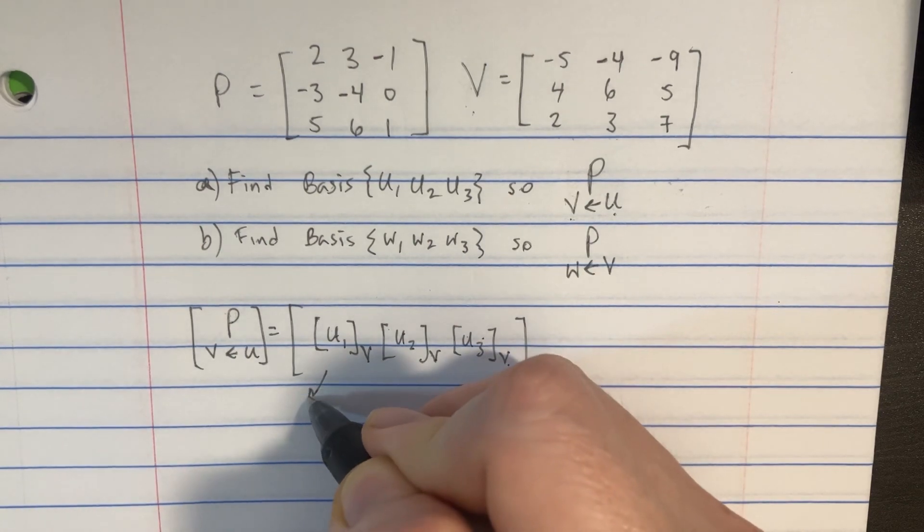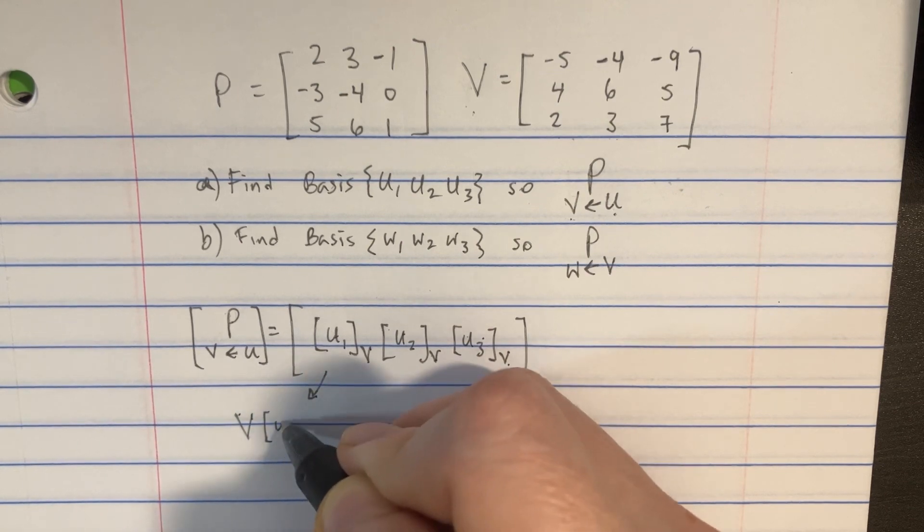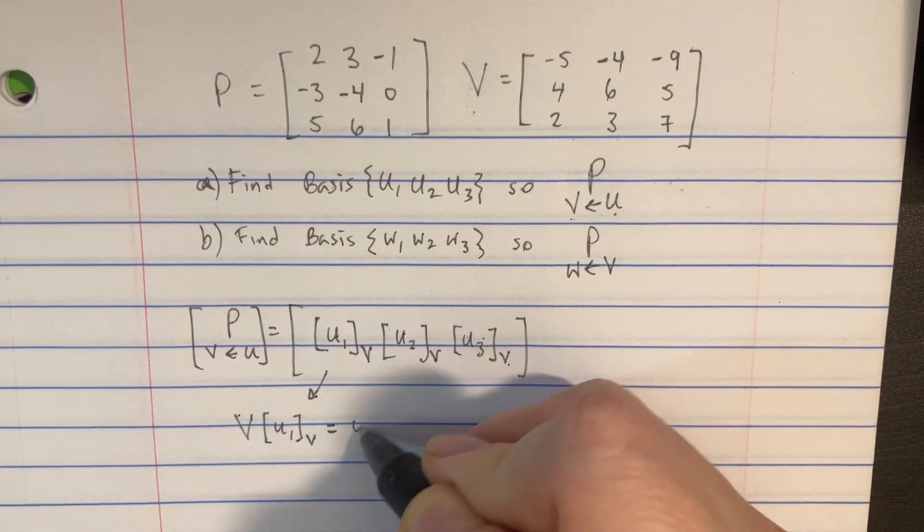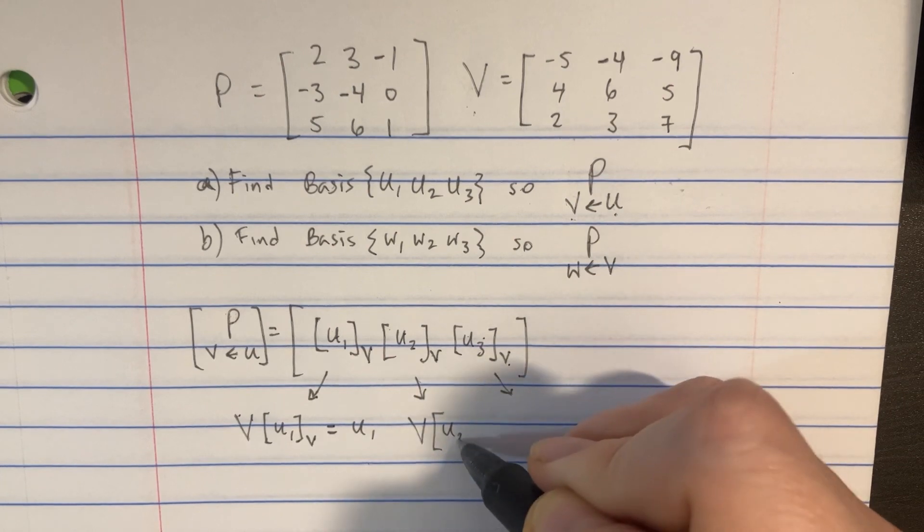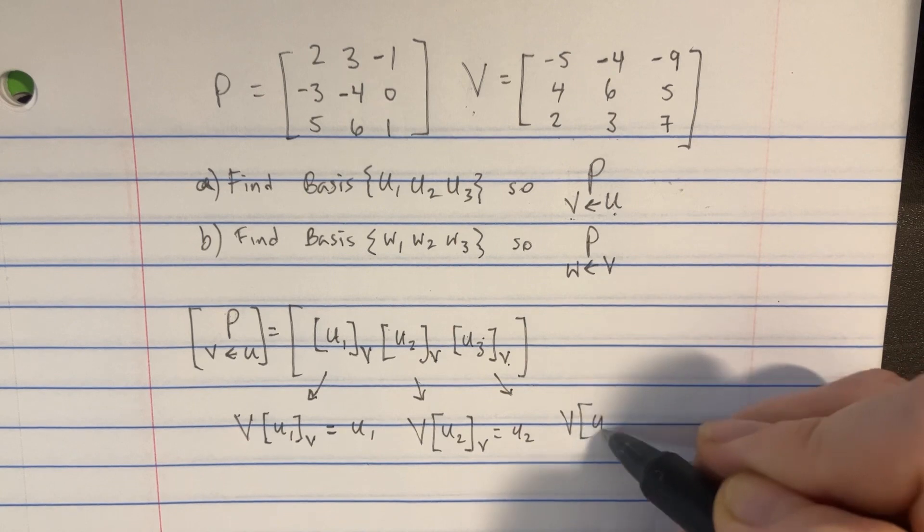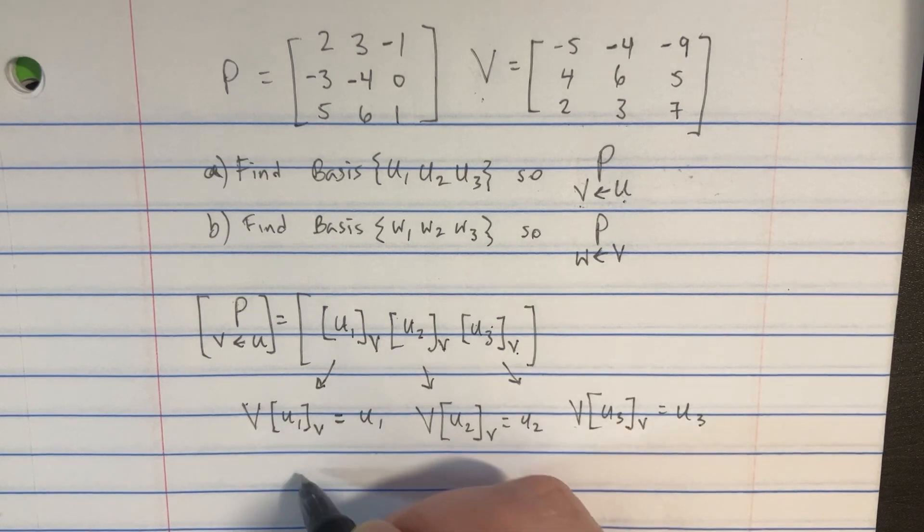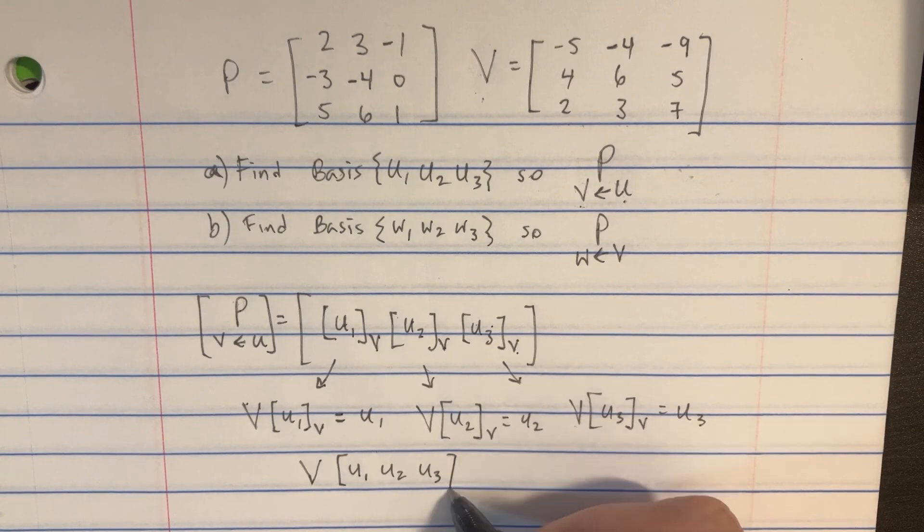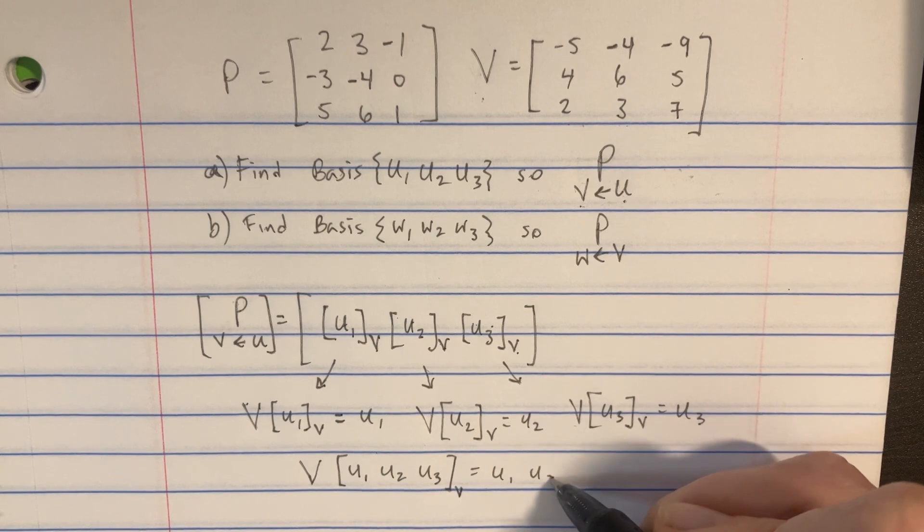But we also know that we can rewrite this. We could say that if we take our V basises, and then multiply it by that U1 with the V basis, it's going to be equal to U1. And we could do that here as well with these. So we could say that V times this U2, the V basis is simply equal to U2, and V times that U3 with the V basis equals U3. From here, it's immediately obvious that we can sort of pack this up and say that V times this U1, U2, U3 is going to be equal to, well, with the sub V there, is equal to U1, U2, U3.